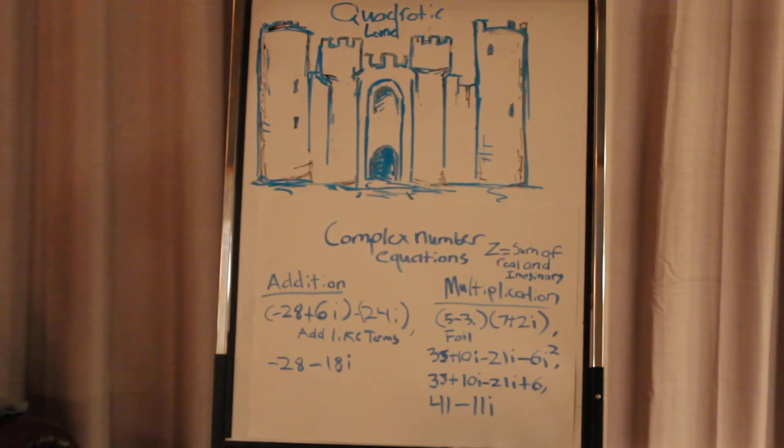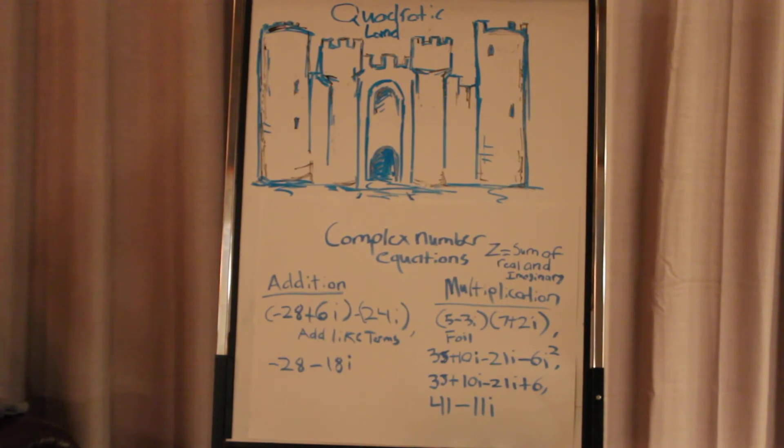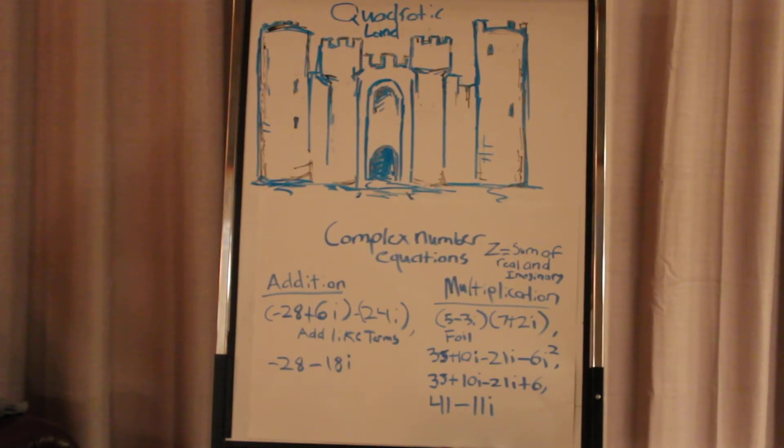And so, as far as addition is concerned, we can see our equation of negative 28 plus 6i in parentheses plus negative 24i in parentheses as well. And so, now we're going to want to add like terms. We know that negative 28 isn't the same as 6i or negative 24i. So, we can't combine those terms. And so, what you're going to do is just add like terms. And then, you'll get negative 28 minus 18i. And that'll be your solution for that. Pretty simple, pretty easy.